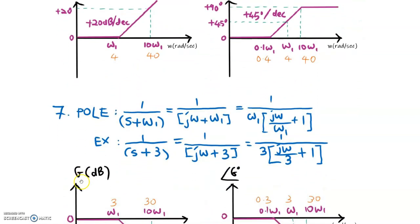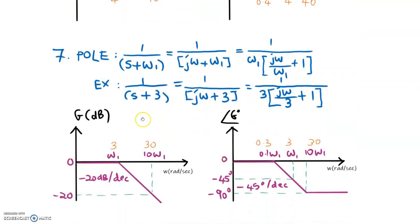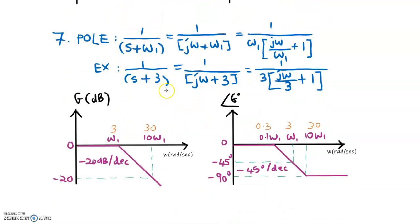Theory number 7 covers poles at the denominator. For example, if we have S plus 3, we rearrange into the frequency domain by replacing S with J omega, giving J omega plus 3. We rearrange until we get plus 1 format. We divide J omega by 3 and multiply the function by 3. So 3 is the cutoff frequency. For the pole, the starting point for magnitude is 0 dB. For frequency less than 3, the slope is 0 dB per decade. For frequency larger than 3 until the end, the slope is negative 20 dB per decade.